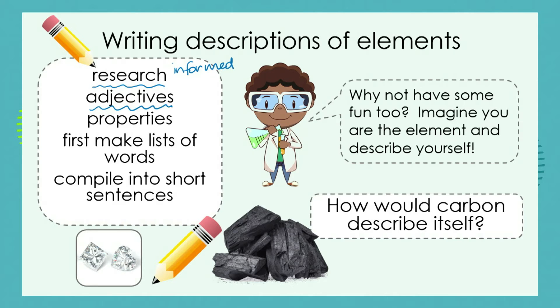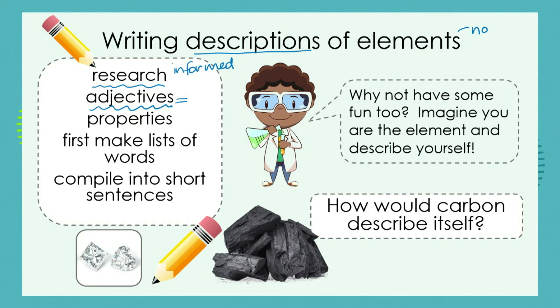You're going to use lots of adjectives in your descriptions. Remember, adjectives tell us about a noun — so the element is the noun. Sulfur, for example, is a thing, a substance. Your adjectives are words that describe the sulfur: things like yellow, crumbly, powdery, smelly — those are element adjectives you use to describe sulfur.